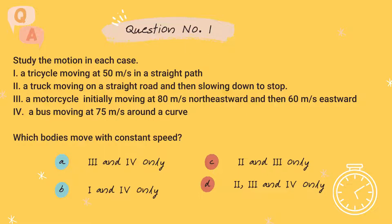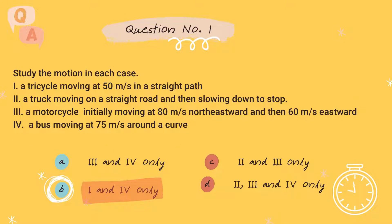Which bodies move with constant speed? Letter A: Three and four only. B: One and four only. C: Two and three only. D: Two, three and four only. The right answer is letter B, one and four only.